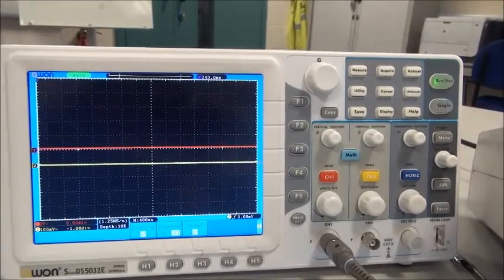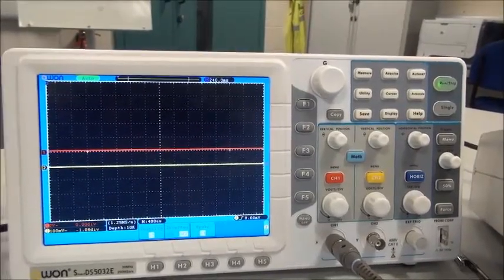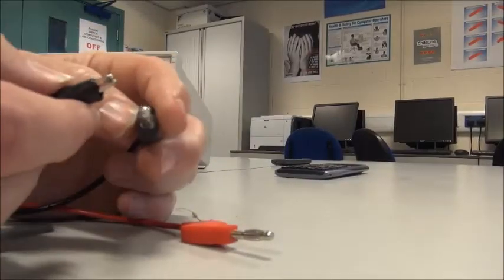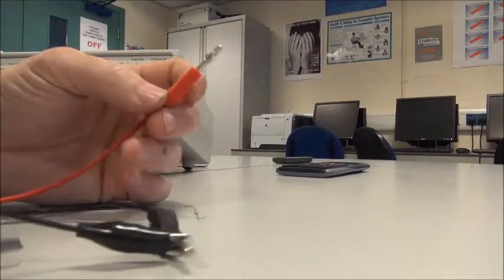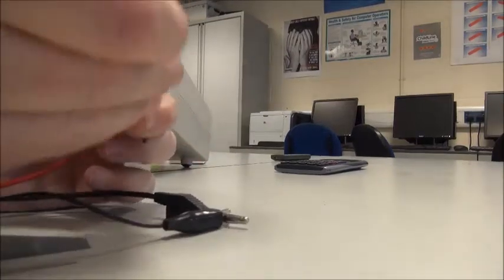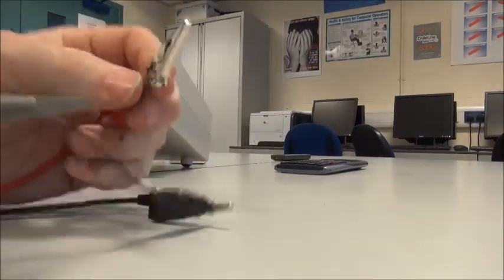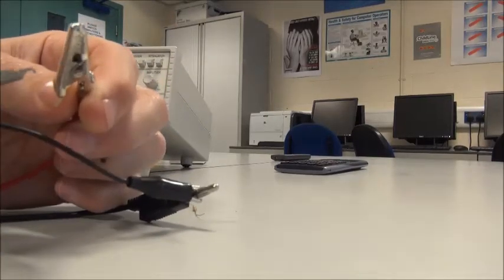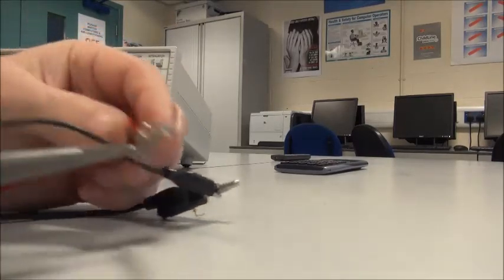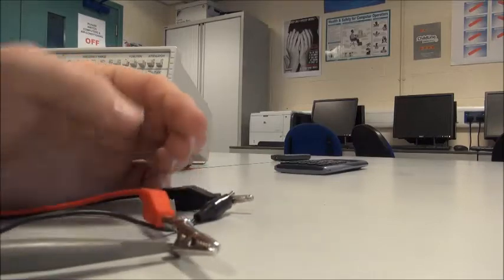So, the next thing we need to do is connect the scope to the function generator. So, what we do, join the negatives together, like this, and then just hook the probe onto a convenient spot on your crocodile clip, like that.